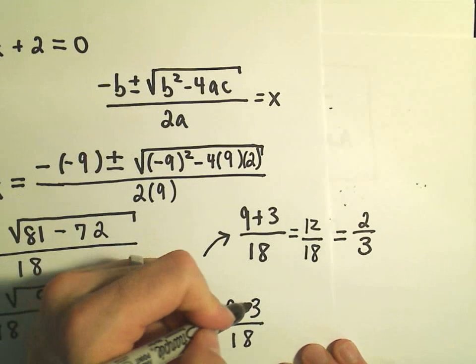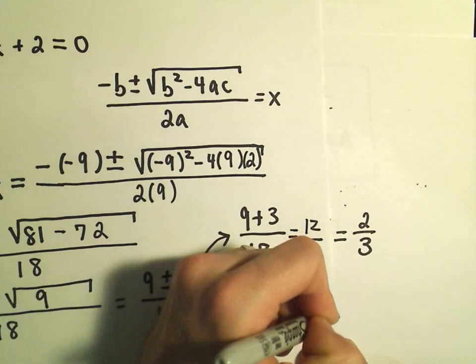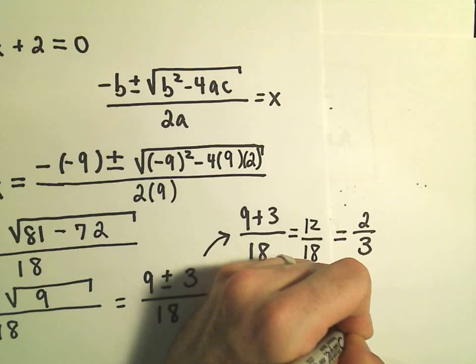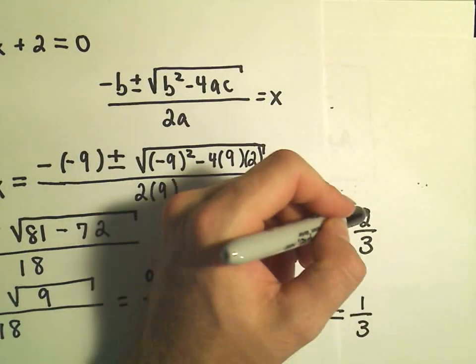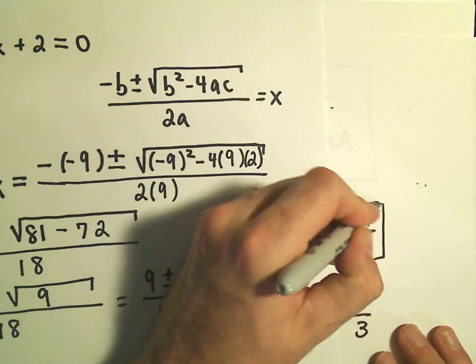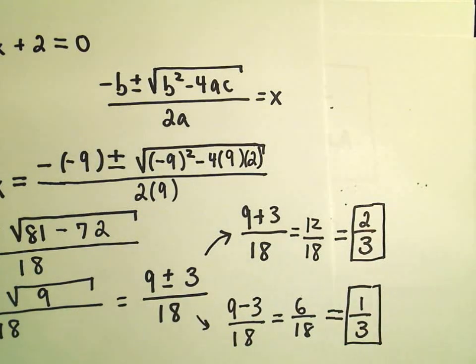And likewise, 9 minus 3 is going to give us 6 over 18. And that's simply going to reduce to positive 1 third. So the solutions to our original quadratic equation, 9x squared minus 9x plus 2, our solutions will be x equals positive 2 thirds and also x equals positive 1 third.